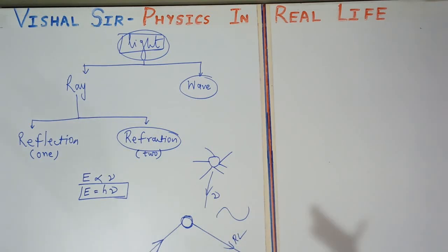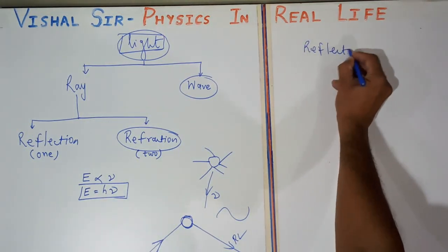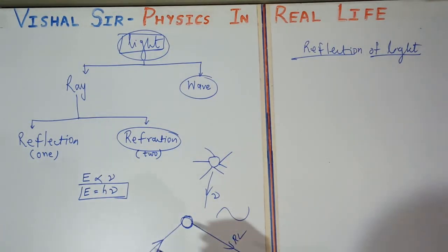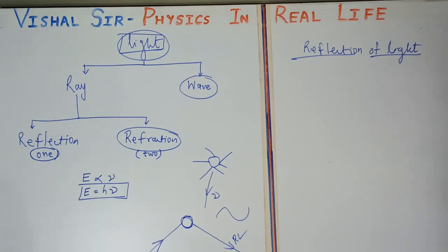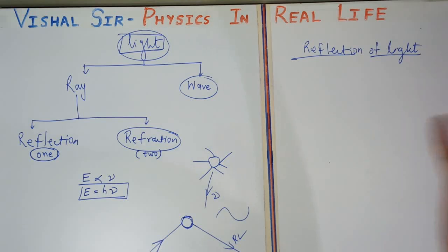Now the next important concept is reflection of light. Reflection of light is when light falls on a highly polished surface like a mirror, most of the light is sent back into the same medium. If the surface is well-polished, 100% of the light reflects back. This process is called reflection of light.